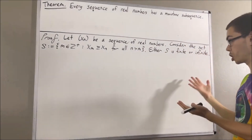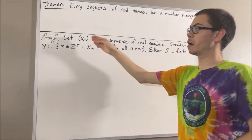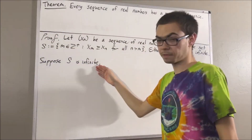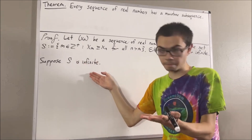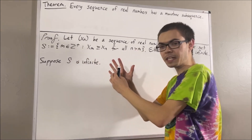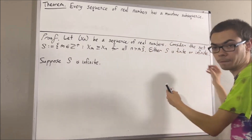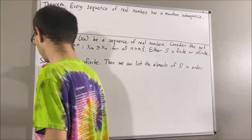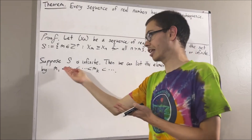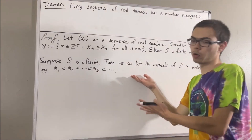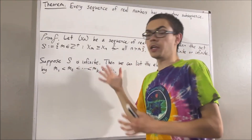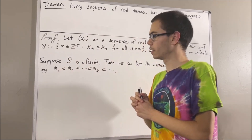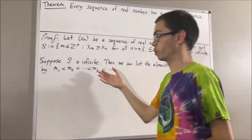We're going to show that in either case we can find a monotone subsequence of xn. Let's start with the case where S is infinite. S is an infinite subset of positive integers, and every infinite subset of positive integers can have its elements listed in order — from smallest to biggest. There exists a bijection from the positive integers to S that is strictly increasing. I'll leave a link in the description which proves this fact regarding infinite subsets of positive integers.